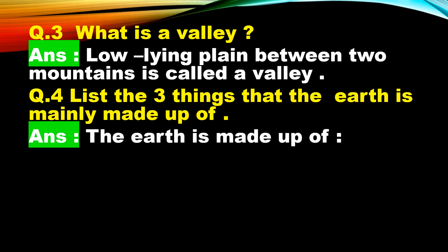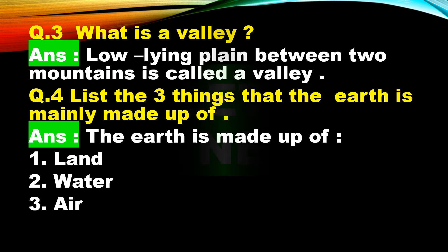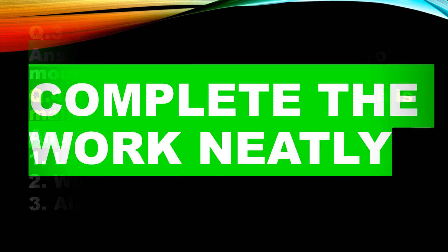Number four: list the three things that the earth is mainly made up of. The earth is made up of number one land, number two water, and number three air. So the earth is made up of land, water, and air.